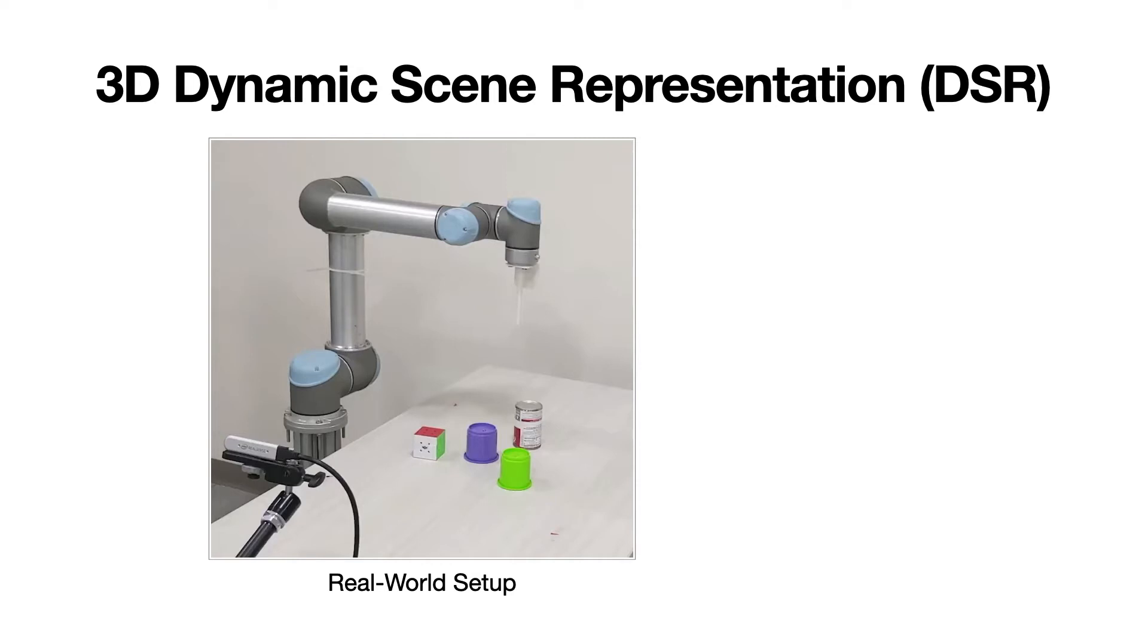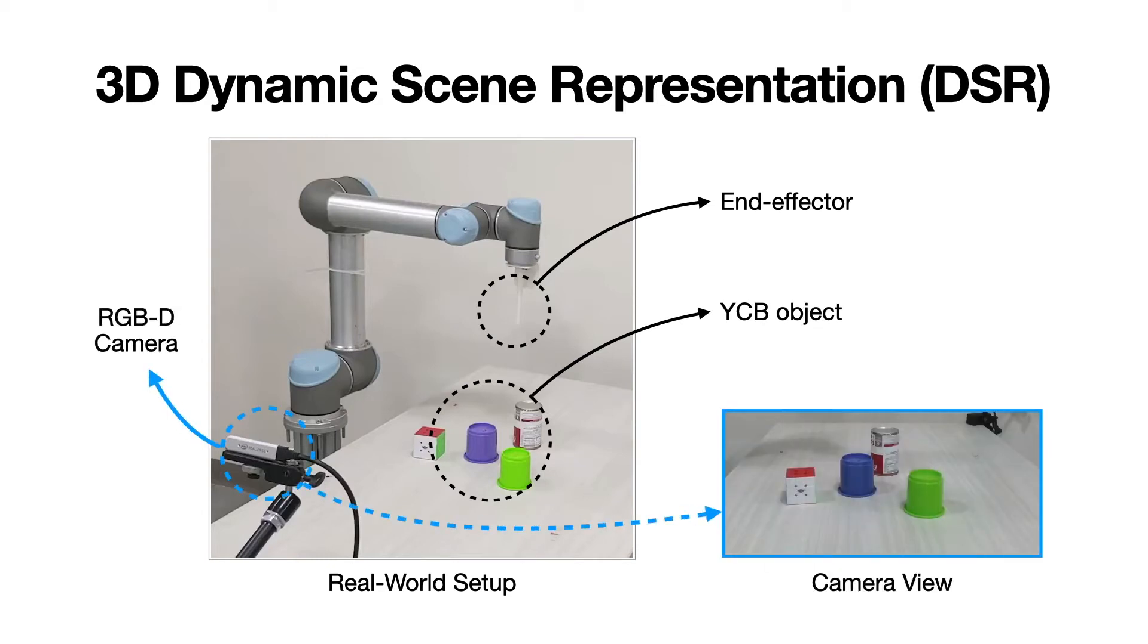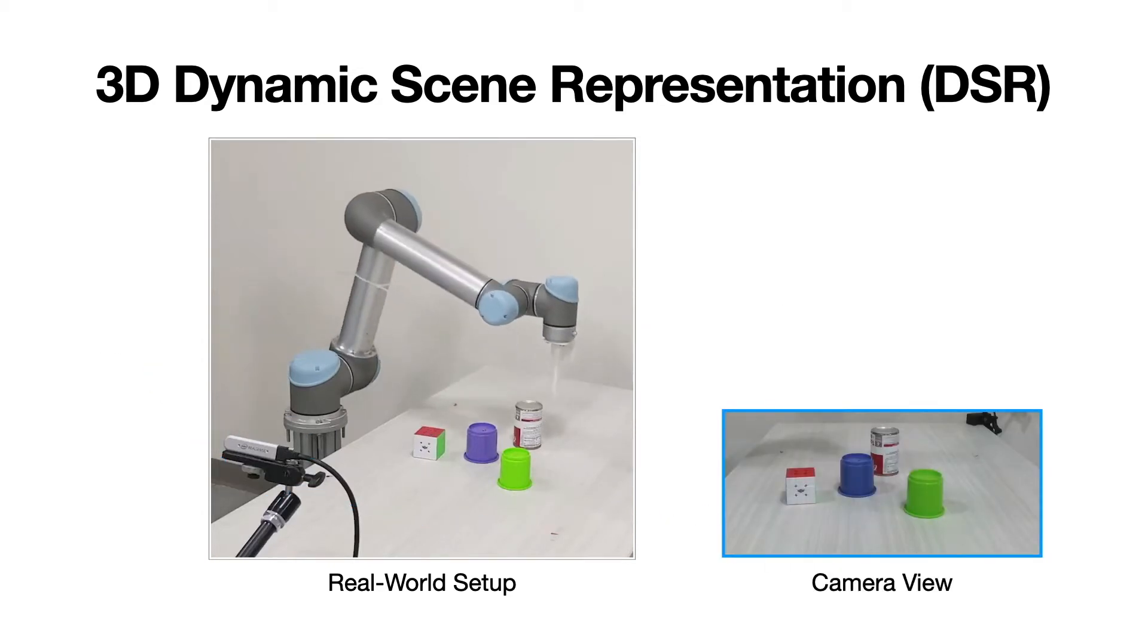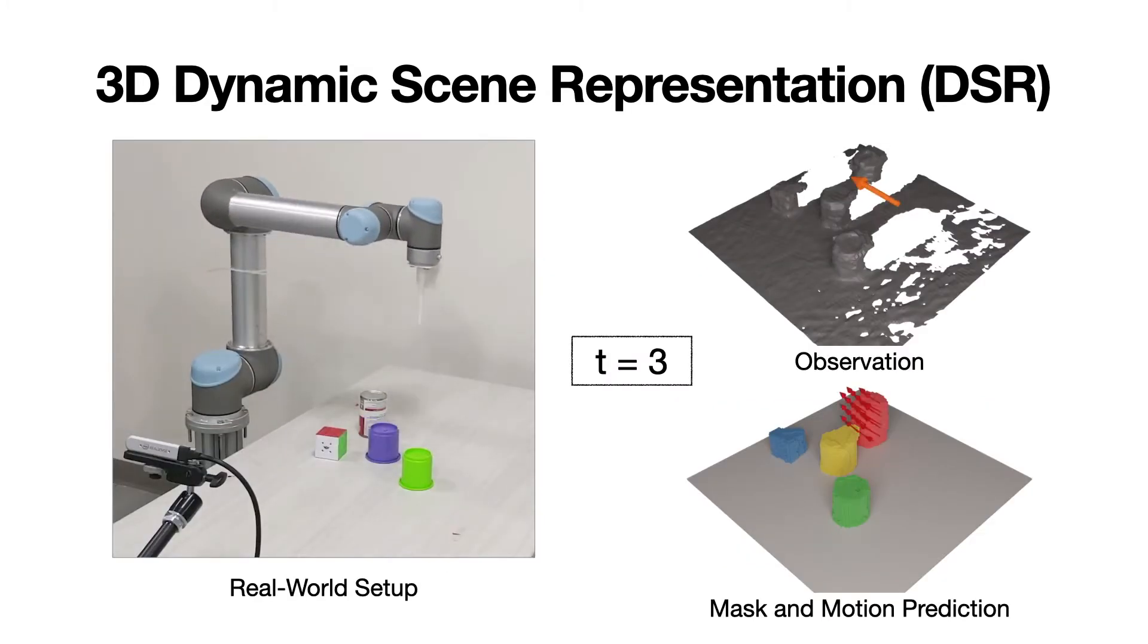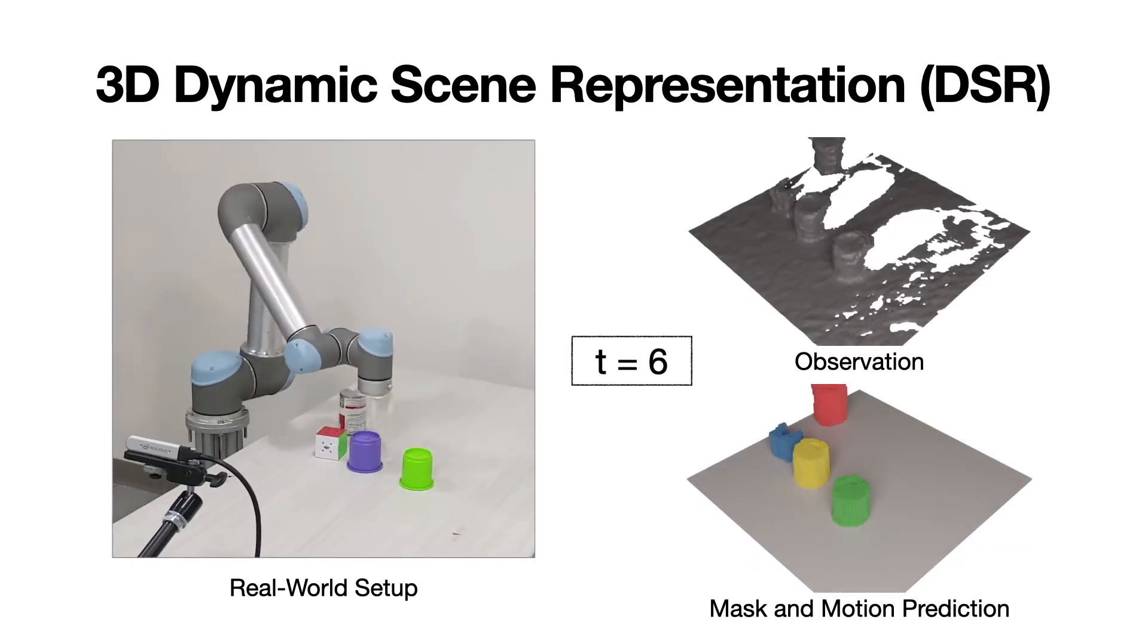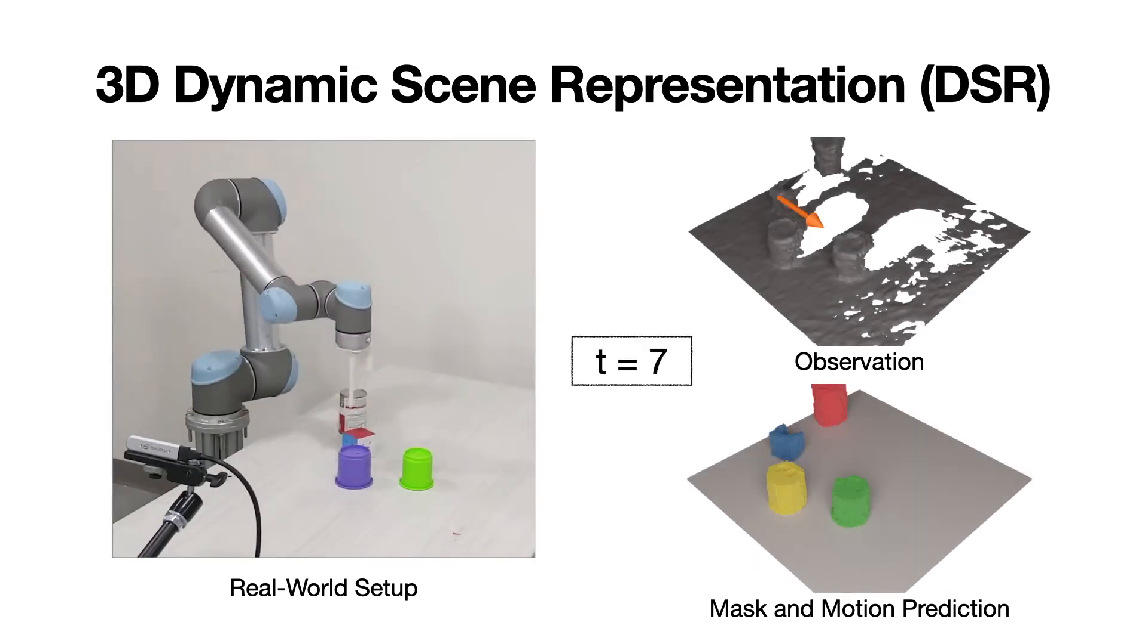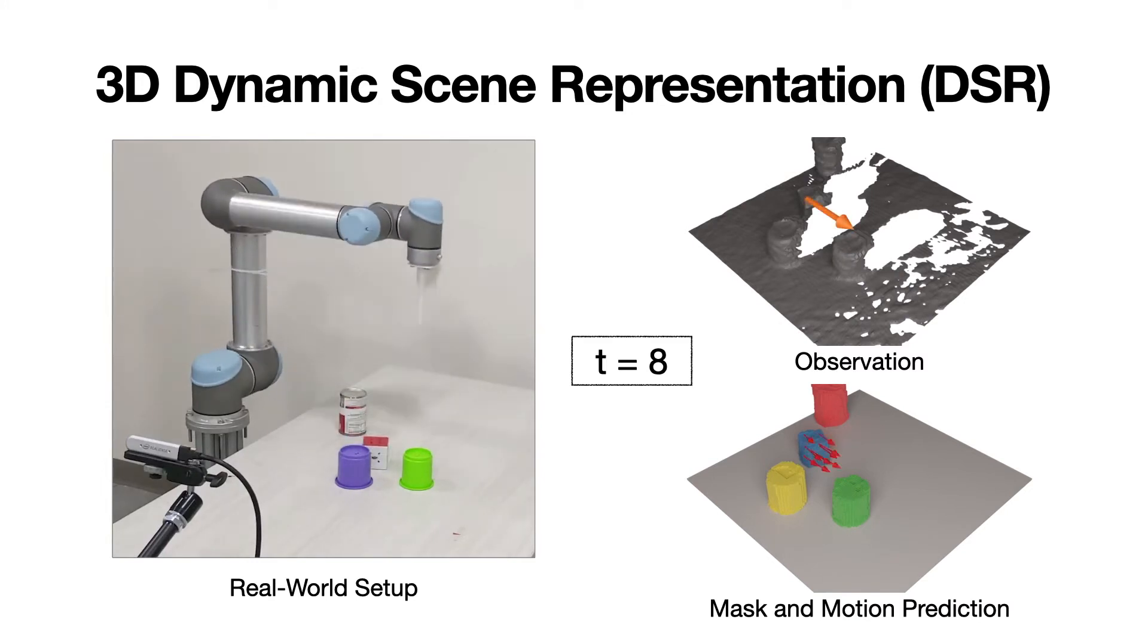Our algorithm is tested on a real robot setup, where a stick is used as an end effector to push objects from the YCB dataset. Scene observations are captured by an RGBD camera. In each step, the robot executes a random push action. Ten interactions are executed in each sequence. On the right, we show our network input observation and output scene representation and motion prediction.